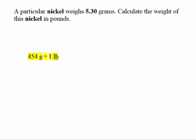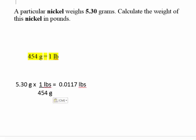In this video, I'll complete English to metric and metric to English conversion problems. A particular nickel weighs 5.3 grams — calculate the weight in pounds. Using the conversion factor 454 grams equals 1 pound, the dimensional analysis setup is 5.3 grams times 1 pound over 454 grams. The grams cancel, and 5.3 divided by 454 equals 0.0117 pounds.